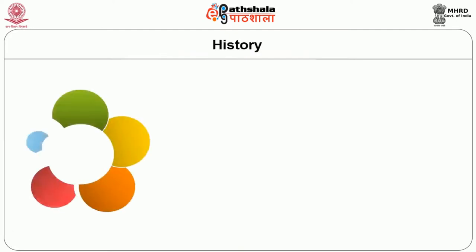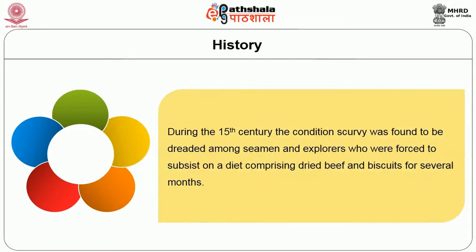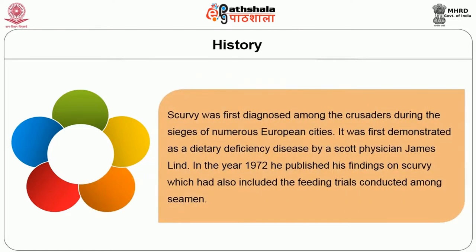Let us get to know about the history. During the 15th century, the condition scurvy was found to be dreaded among seamen and explorers who were forced to subsist on a diet comprising dried beef and biscuits for several months. Scurvy was first diagnosed among the crusaders during the sieges of numerous European cities. It was first demonstrated as a dietary deficiency disease by a Scottish physician James Lind, who published his findings on scurvy which included feeding trials conducted among seamen.